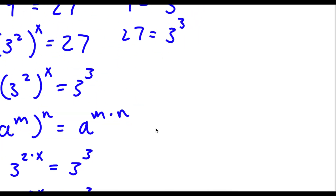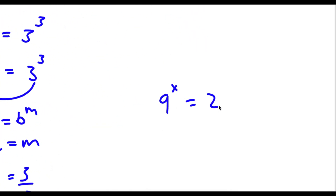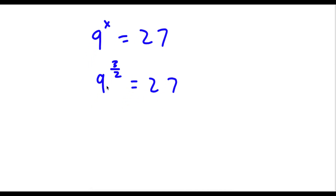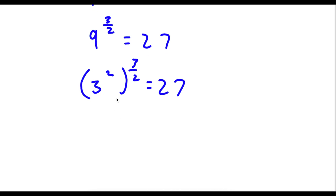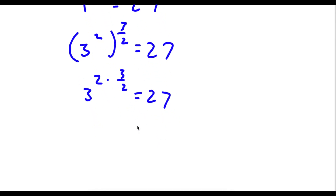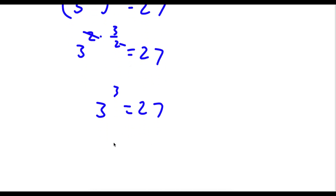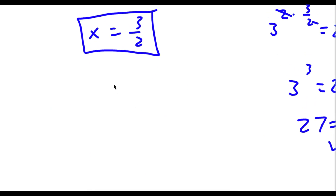Alright, so now to check: our original equation was 9 to the power of x is equal to 27, and x is 3 over 2. So I have 9 to the power of 3 over 2 is equal to 27. Now 9 is the same thing as 3 squared, so I have 3 squared to the power of 3 over 2. That gives 3 to the power of 2 times 3 over 2, these two cancel out, leaving 3 to the power of 3, which equals 27. So 27 equals 27, which confirms our solution is correct.